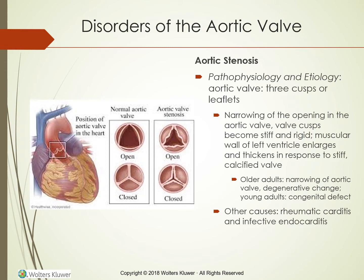The aortic valve has three cusps and is described as semi-lunar because each cusp appears like a half moon. The left ventricle pumps blood through the aortic valve. When the left ventricle contracts, a fully functioning aortic valve opens to allow unrestricted passage of oxygenated blood into the arterial vascular system. The coronary arteries supply the myocardium and are the first vessels perfused after ejection. The aortic valve then closes tightly to prevent backflow. Two conditions interfere with unidirectional flow: aortic stenosis and aortic regurgitation.